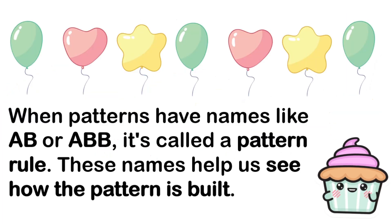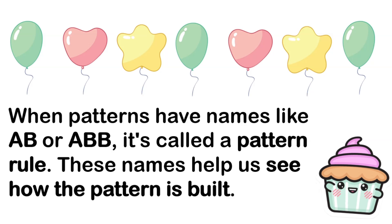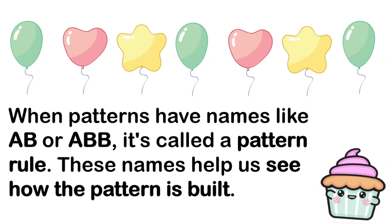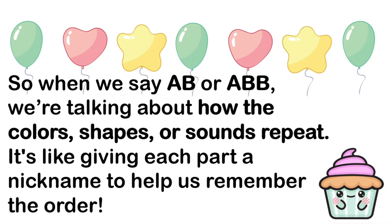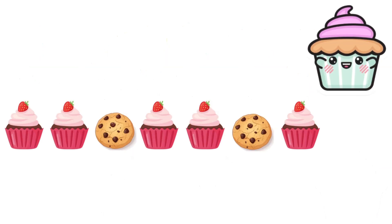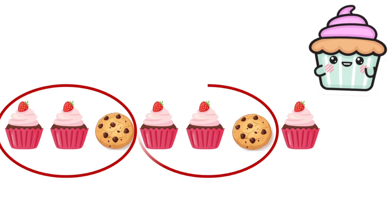When patterns have names like AB or ABB, it's called the pattern rule. These names help us see how the pattern is built. So when we say AB or ABB, we are talking about how the colors, shapes, or sounds repeat. It's like giving each part a nickname to help us remember the order.